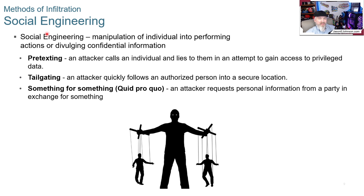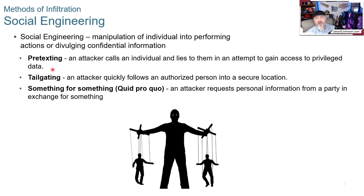Social engineering is a method of infiltration — manipulation of individuals into performing actions or divulging confidential information. Pre-texting is when an attacker calls an individual and lies to them in an attempt to gain access to privileged data. For example, a bad actor might find out who the local IT contractor is for small businesses, call those businesses impersonating that contractor, and either walk in and pick up laptops or gain access to systems — lying throughout in an attempt to gain access.